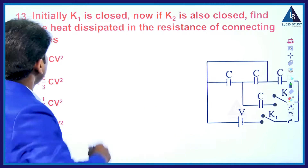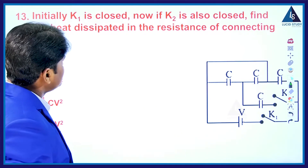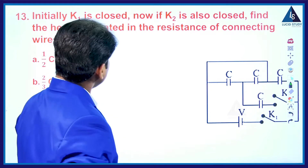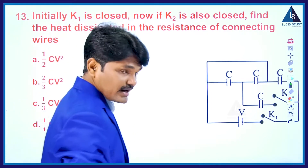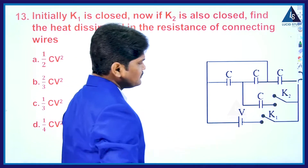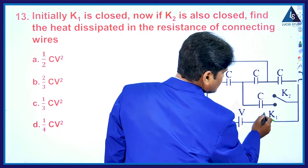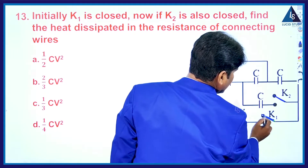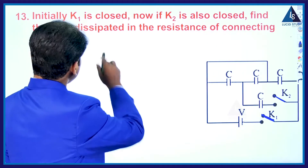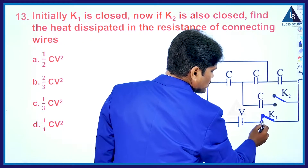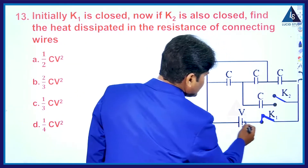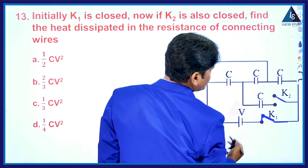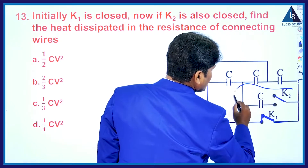This is our next question. Initially k1 is closed; now if k2 is also closed, find the heat dissipated in the resistance of connecting wires. Here is our diagram — key k1 is here and key k2 is also here. Initially only key k1 is closed, so only this wire will be in connection and this part will not be in connection.